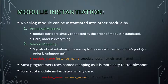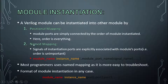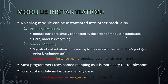For designing a ripple carry adder, we first need to look at module instantiation in Verilog. A Verilog module can be instantiated into another module by positional mapping or name mapping. There are two methods: number one is positional mapping, and the second is named mapping.